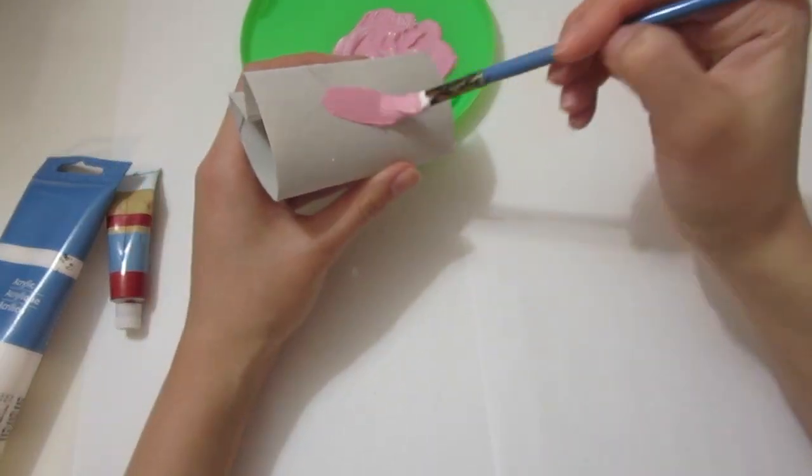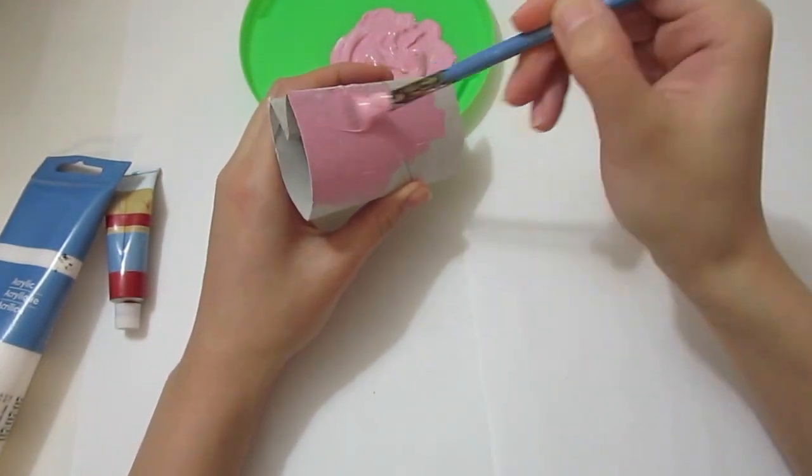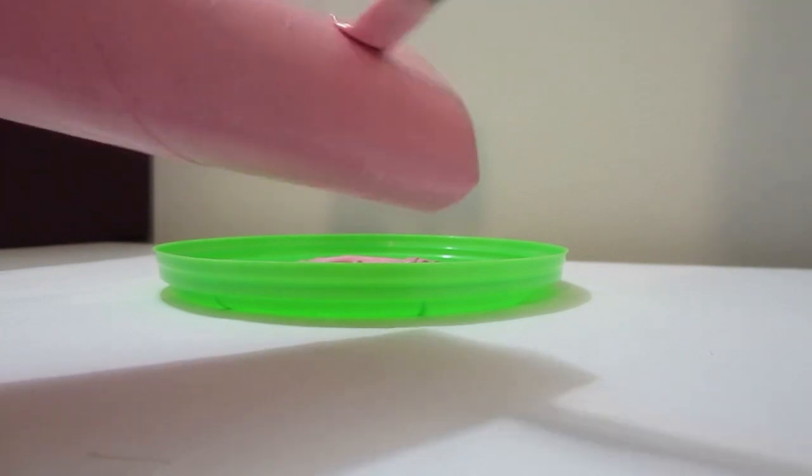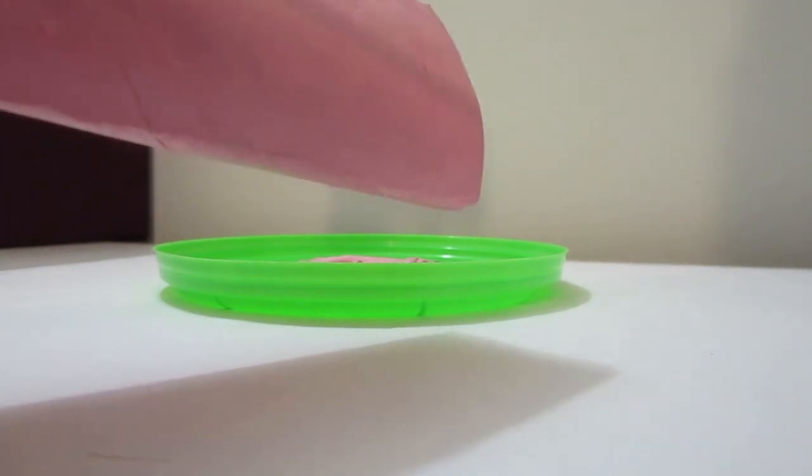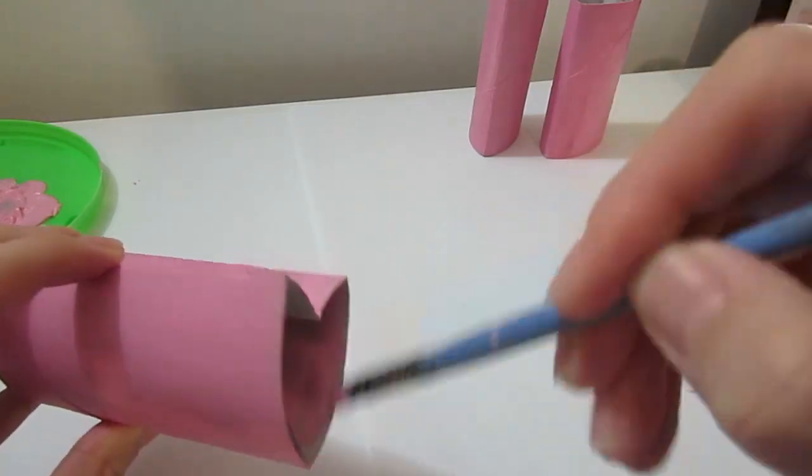Once you have the right color, go ahead and paint the outside of the toilet paper roll and once it's dry, paint the inside as well.